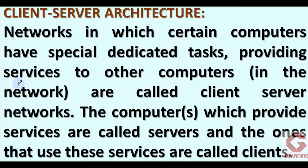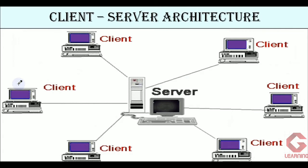In this picture of client-server architecture, six client computers are connected to one server computer. Whatever data we want to share with all client computers, as well as applications we want all client computers to use, everything will be stored in the server computer and all client computers can access it. If we want to share a hardware resource such as a printer or scanner, we connect it to the server computer, and then all client computers can use that hardware device.